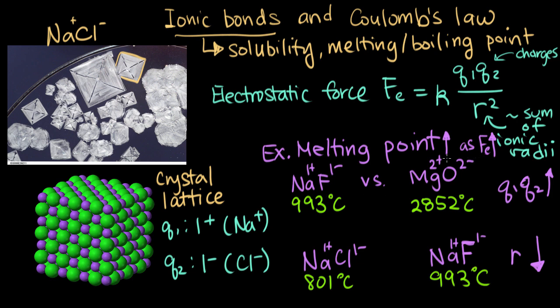In each of these pairs, the compound that has the higher melting point is the one that also has the higher electrostatic forces, and that's either because the charges are higher—Q1 and Q2 are higher—or because the distance between the ions went down. These are some examples for how we can relate the properties of ionic compounds to the electrostatic force using Coulomb's law between the cation and the anion.